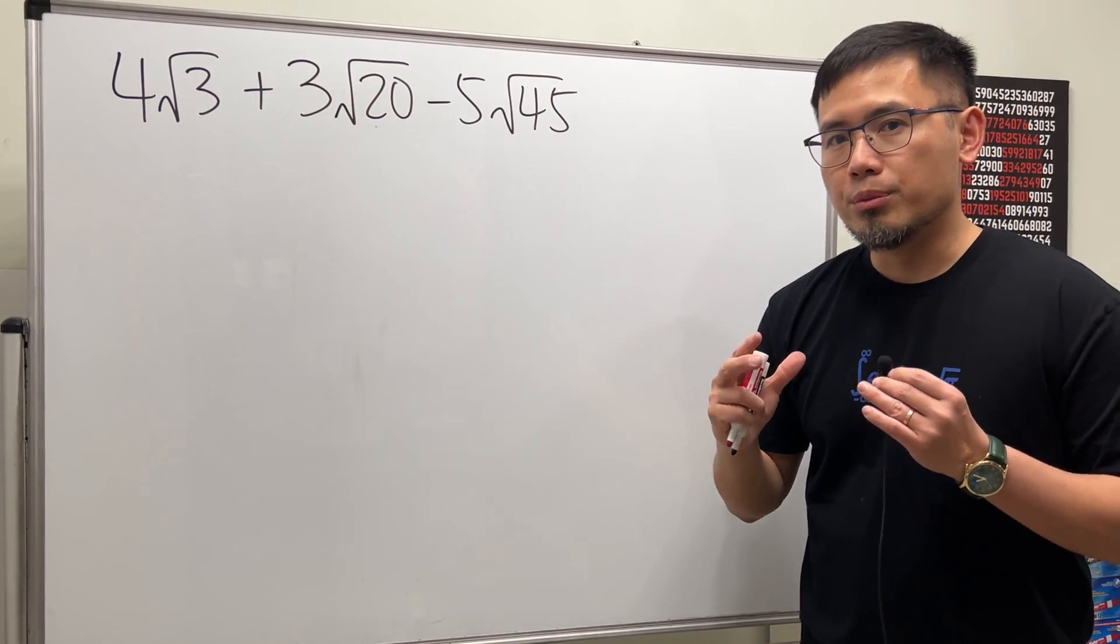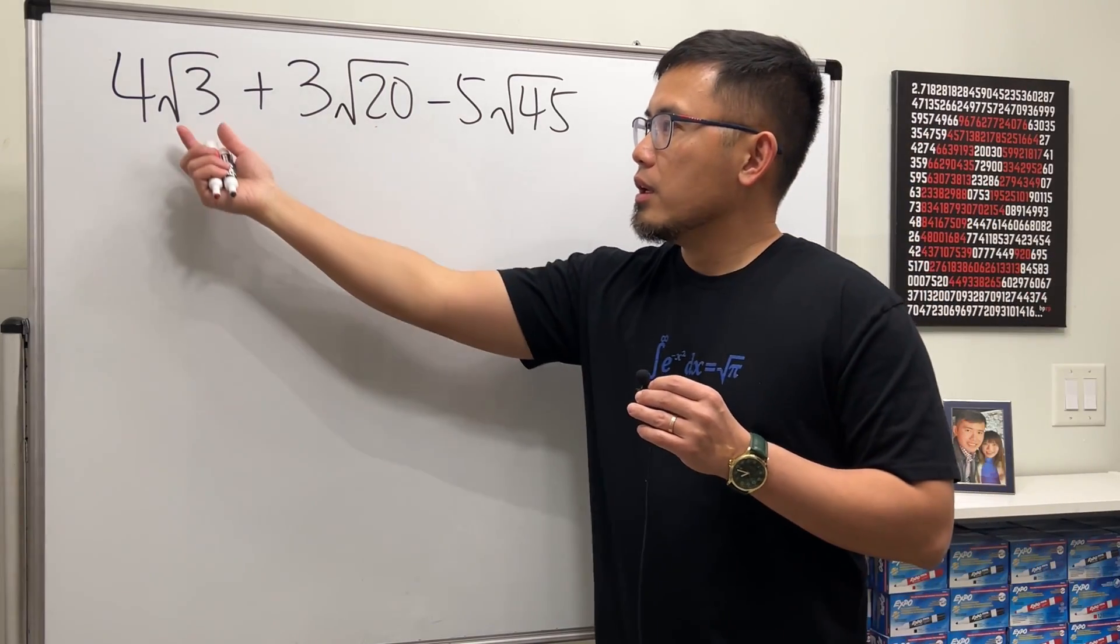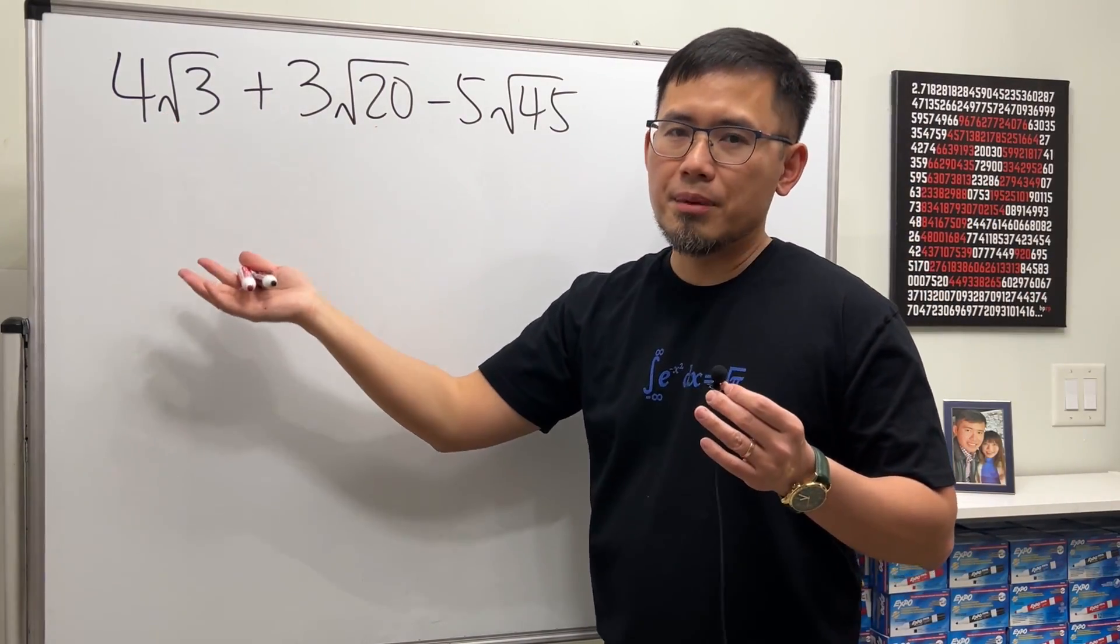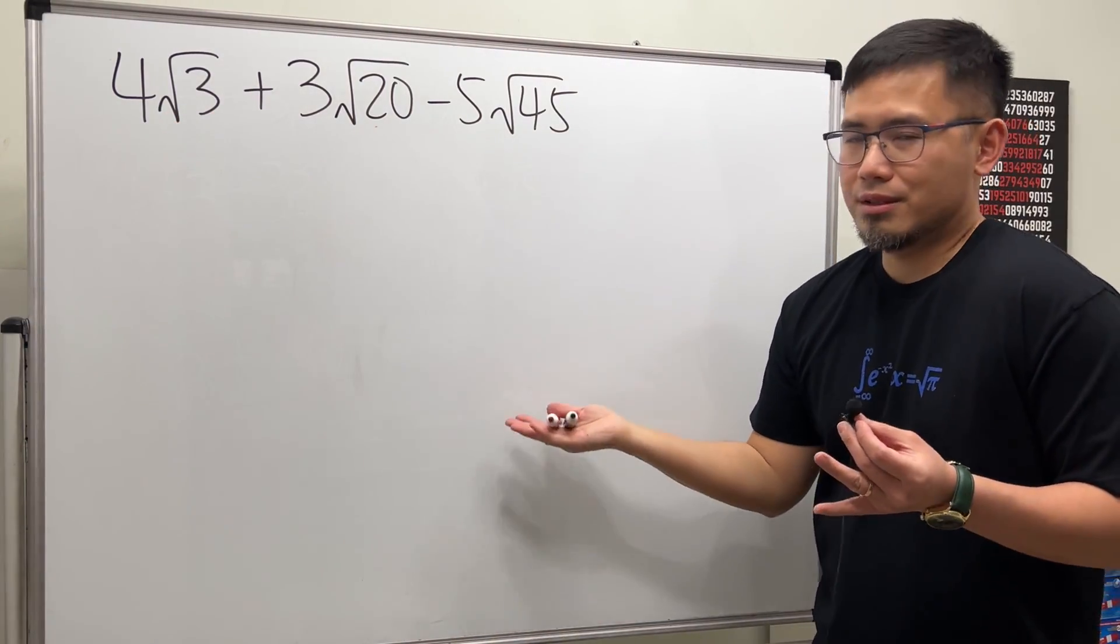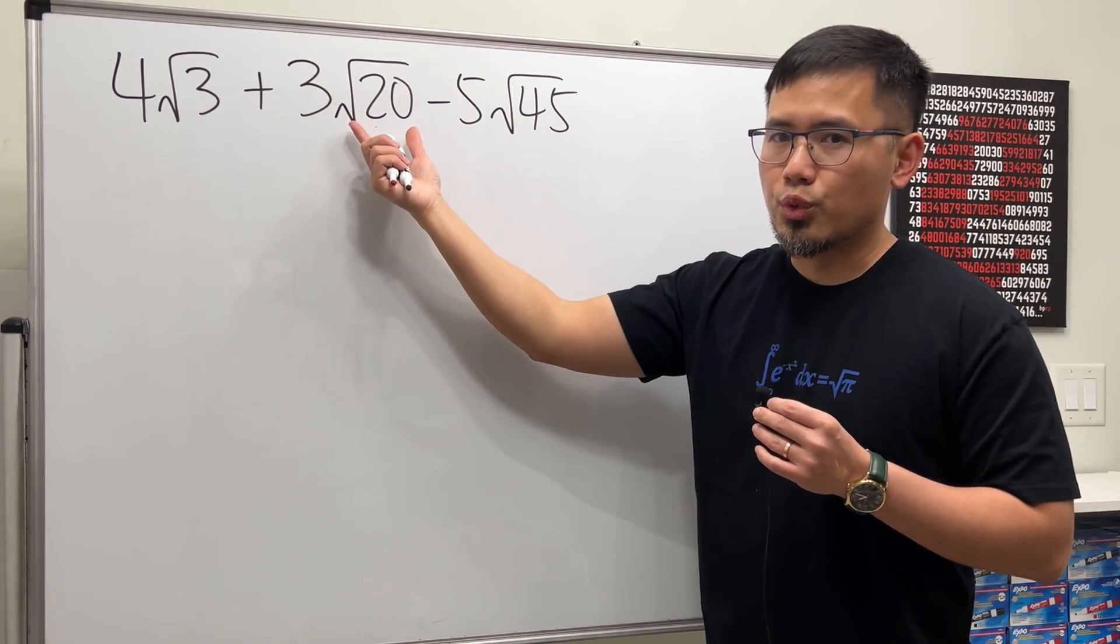Well, in this case we are trying to combine these three square root numbers. The first step is we have to make sure we reduce all the square roots. √3 cannot be done, right? Just 3 times 1, that's pretty much it. But we can actually break down √20.